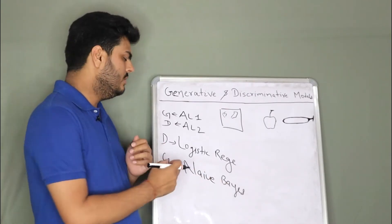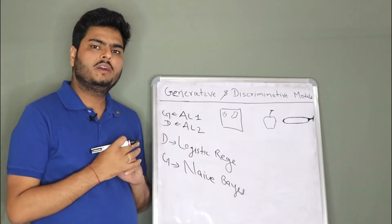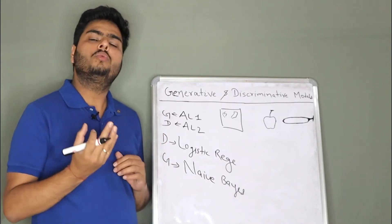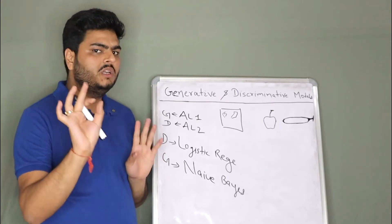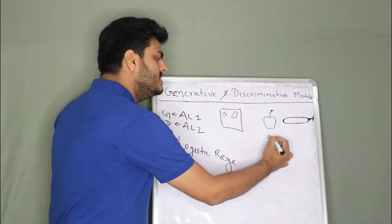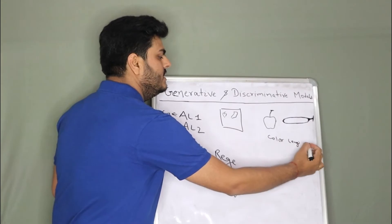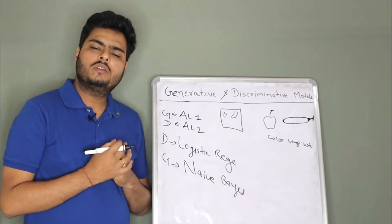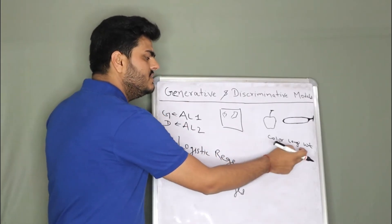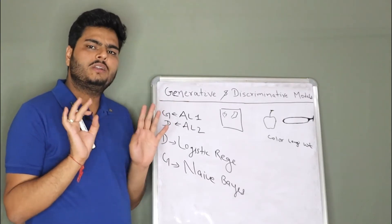Now, you must be aware how logistic regression and Naive Bayes works. What logistic regression does is, it tries to create a decision boundary based on different features of the input. What can be the features here? The feature can be color, the feature can be length, the feature can be weight. So when you train a logistic regression model, it will take all these features into consideration and learn some patterns like this.